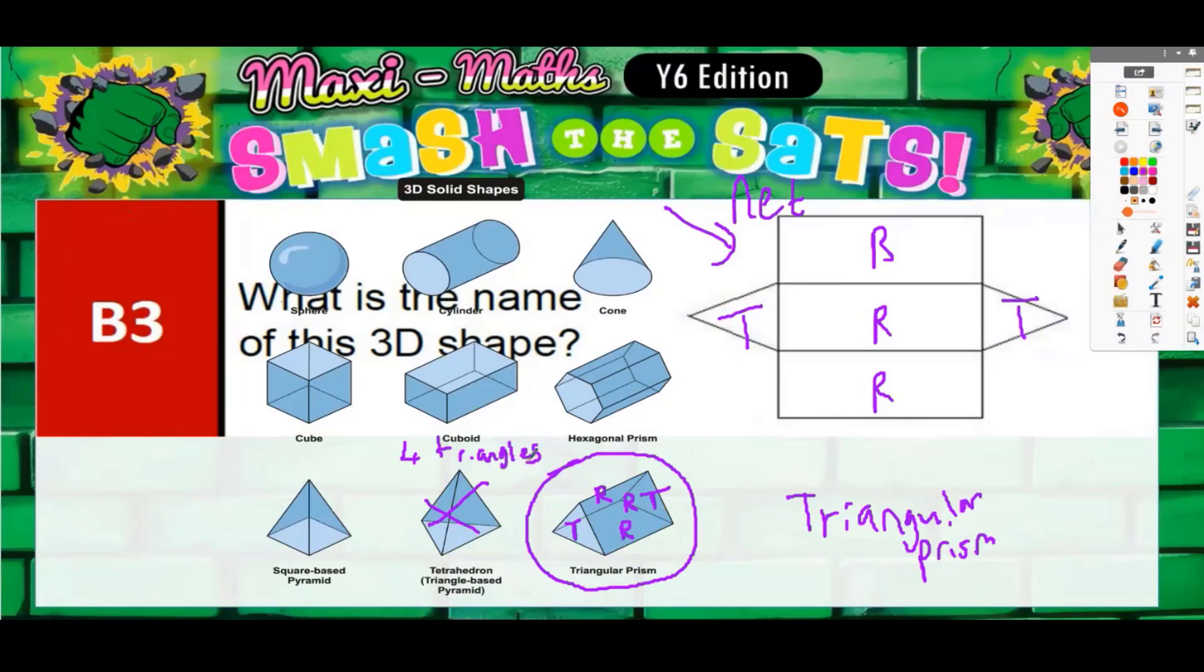And our net doesn't have four triangles, it only has two. It can't be a square-based pyramid either - a square-based pyramid would have four triangles and one square at the bottom. That's not what we've got here. It's two triangles, three rectangles, and that's got to be a triangular prism.